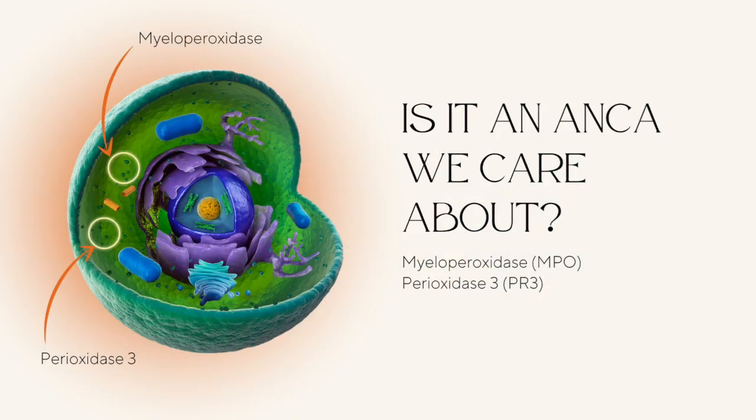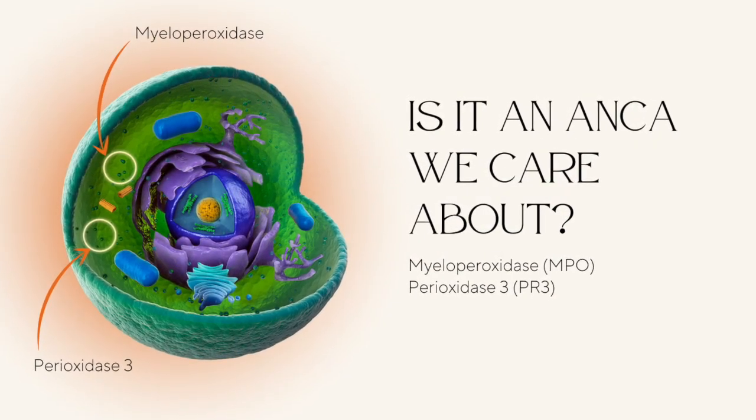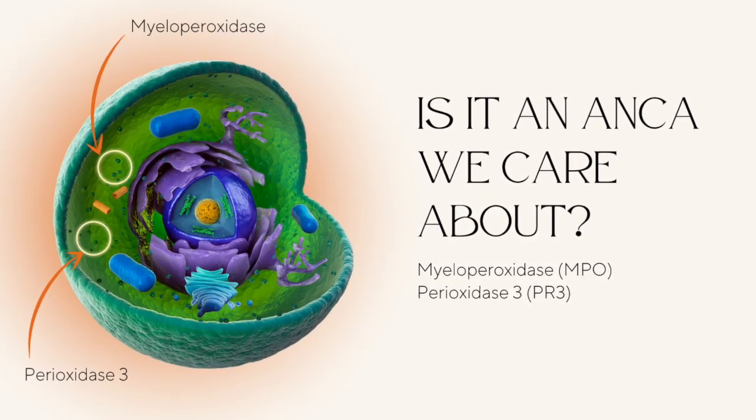So how do we interpret the ANCA result? Just having a positive ANCA, similarly to having a positive ANA, doesn't tell us a lot. We need to keep digging and find out what type of ANCA it is. Every antibody has its antigen — the target it attacks. The two targets we're most concerned about when it comes to ANCA-associated vasculitides are two proteins: myeloperoxidase, or MPO, and proteinase 3, or PR3. These are the two ANCA targets with the closest association with these particular conditions.